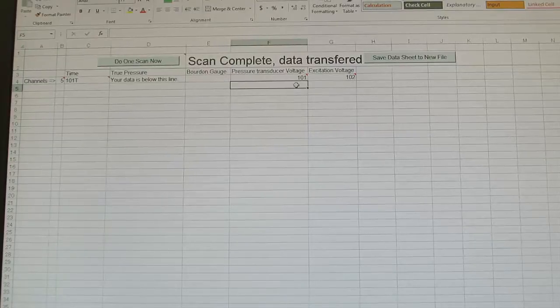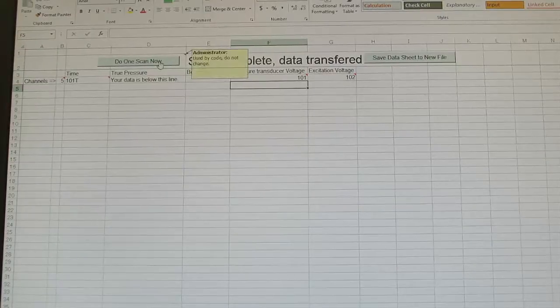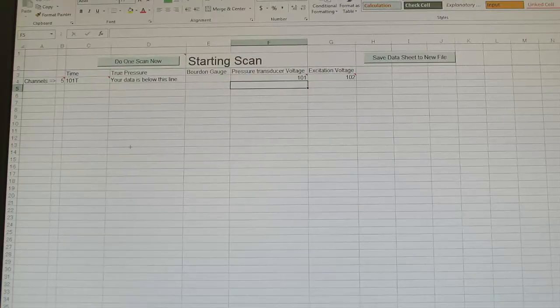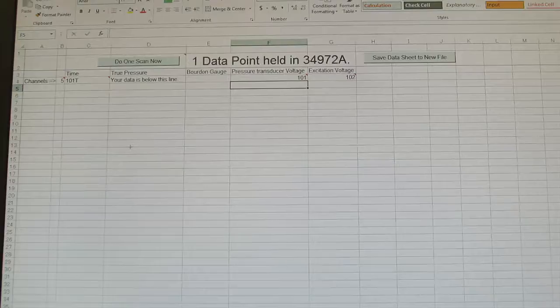Then to get the computer to take the transducer voltages, you highlight the cell where you want to record the readings and press the Do One Scan Now button to take data from the data logger.